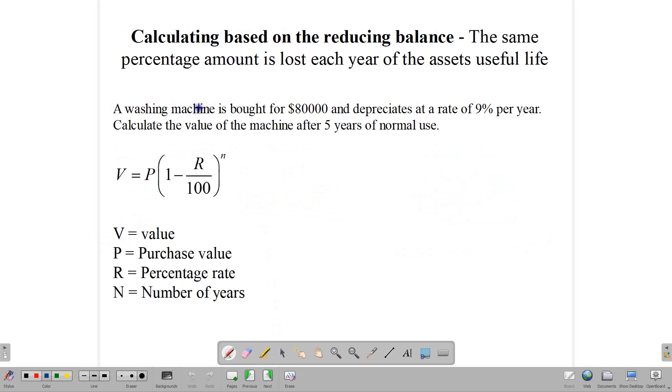Now, let's use the reducing balance method to find the value of the machine, same machine. But in this one, we're using a formula. And here we say V equals P bracket one minus R over 100 to the N. The V here would be the value in future. The P is the purchase value. One minus the rate over 100 to N, which is the number of years. This is pretty much a calculator method. So the value of the machine after five years is going to be $80,000 times one minus 9 over 100 to the number of years, which is five.